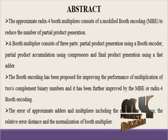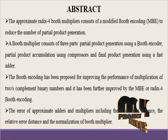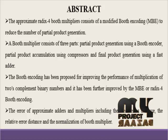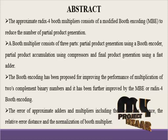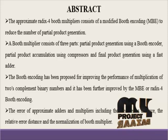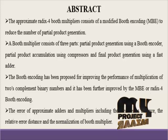Here we propose the regulation of the approximate multipliers. The design of the booth multipliers can be extensively evaluated for error analysis. The proposed multipliers can be applied for image processing applications. The booth multiplier consists of three parts: partial product generation using booth encoders, partial product accumulation using compression values, and final product generation using a fast adder.